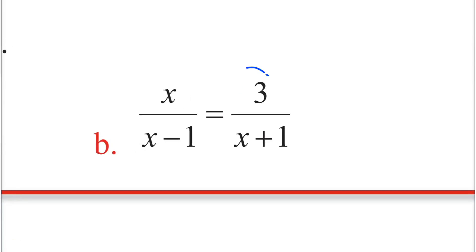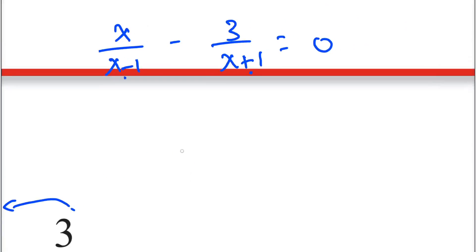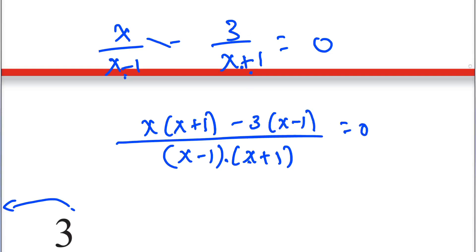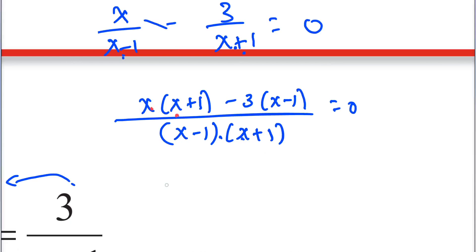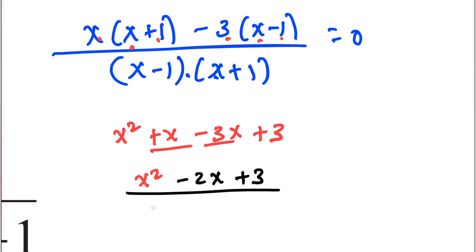We write x over x minus 1 minus 1 equals zero. Then x minus 1 times x plus 1 equals zero. x times x plus 1 minus 3 times x minus 1 equal to zero, giving x squared plus x minus 3x plus 3 over x minus 1 times x plus 1 equal to zero.